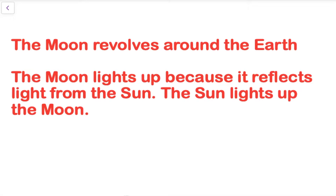Because the light on the moon is a result of the sun's rays lighting up the moon, as the moon revolves around earth and its position changes relative to where the sun is, that's why we see different moon phases — different shapes of the moon's light as it moves in its position revolving around the earth.